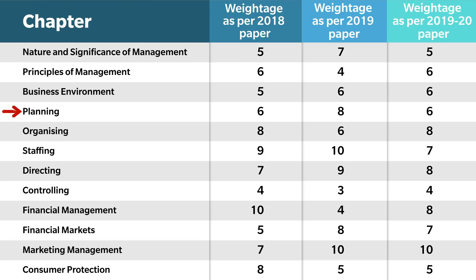In the Planning chapter, it was 8 marks in 2018, and in the CBSE sample paper they have 6 marks. The Organizing chapter was 8 marks in 2018's paper, in 2019 it was 6 marks, and in the sample paper it was 8 marks.